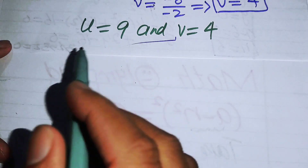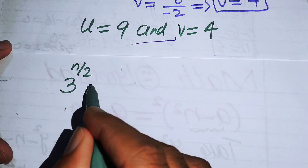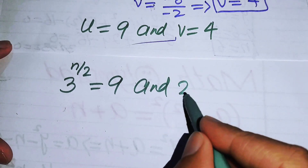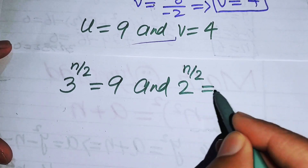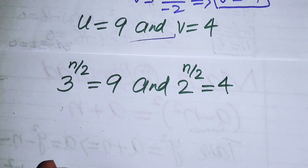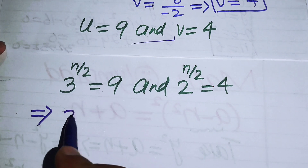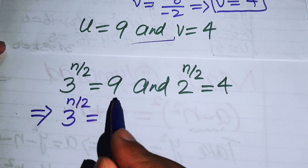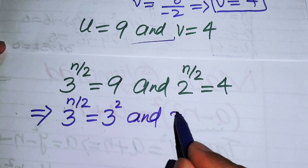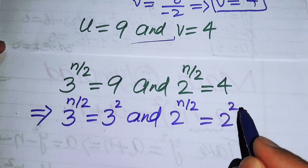Substituting u equals 9: 3 to the power of n over 2 equals 9, and we write 9 as 3 squared. Substituting v equals 4: 2 to the power of n over 2 equals 4, and we write 4 as 2 squared.